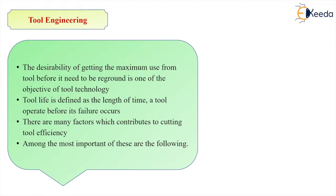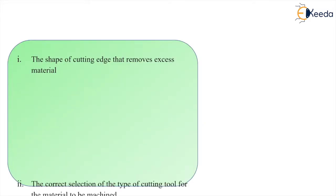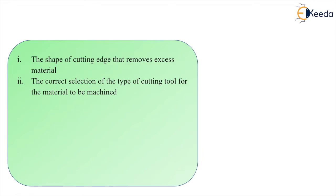There are many factors contributing to cutting tool efficiency. Among the most important are: the shape of cutting edge that removes excessive material from the workpiece; the appropriate selection of the type of cutting tool — based on the workpiece you are going to machine, its hardness, and its mechanical properties, you select the tool that is able to machine that part.